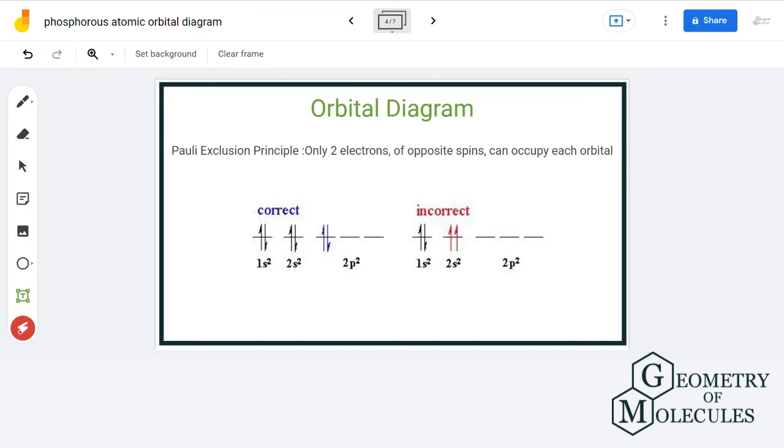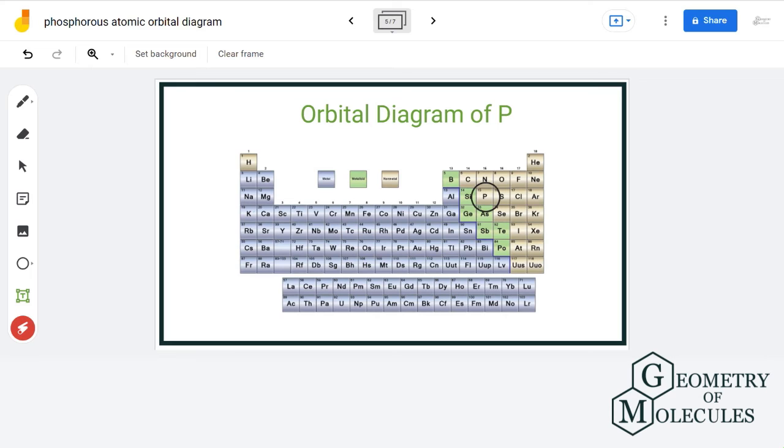Now that we have discussed the basics that we should know for orbital diagrams, let us move ahead and draw one for phosphorus. Now phosphorus is a p-block element and has an atomic number of 15. That means that it has 15 protons and 15 electrons.